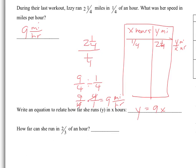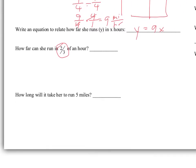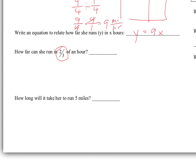How far can she run in two-thirds of an hour? Looking at two-thirds of an hour and relating that back to the chart — that goes in my X column. So I'm going to use the equation Y equals nine X, substituting two-thirds in for X. I can do some cross-canceling and that gives me Y is equal to six miles.